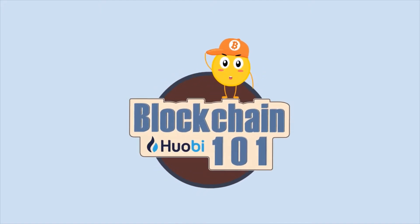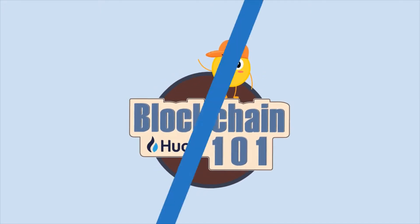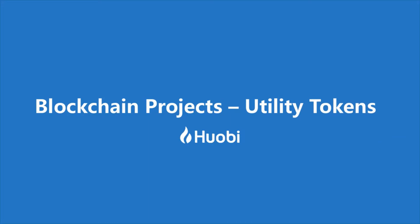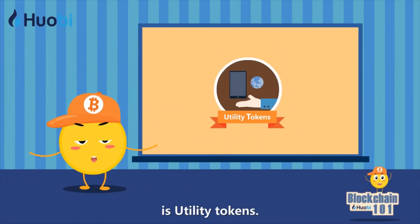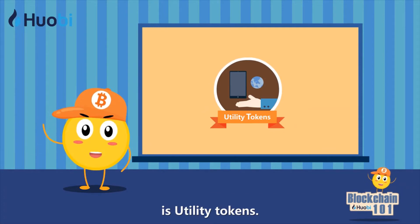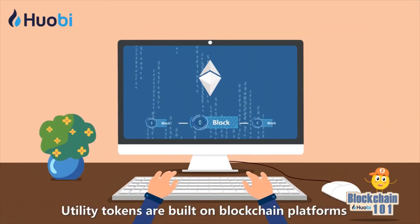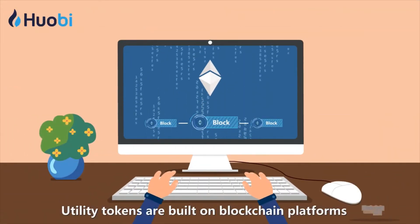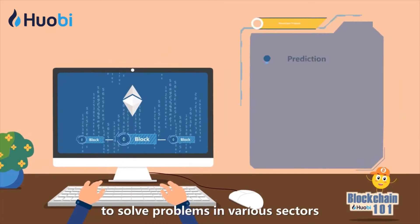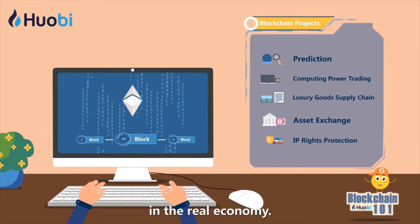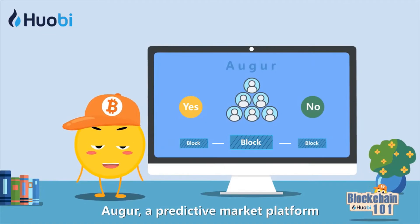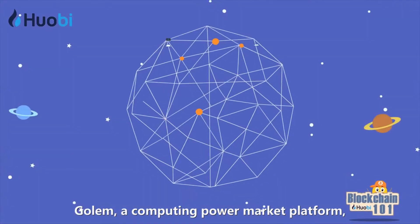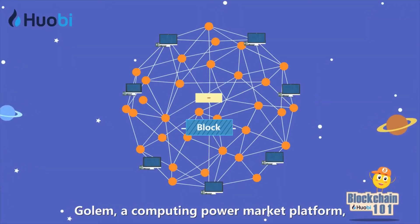One minute a day blockchain 101: blockchain projects — utility tokens. The third type of blockchain project is utility tokens. Utility tokens are built on blockchain platforms such as Ethereum to solve problems in various sectors in the real economy. Some examples are Augur, a predictive market platform, and Golem, a computing